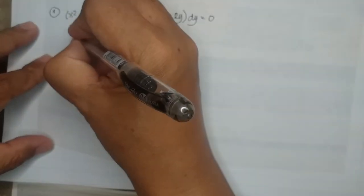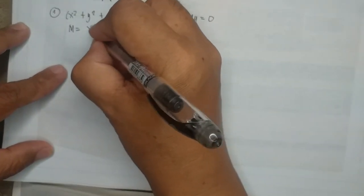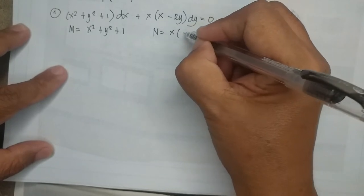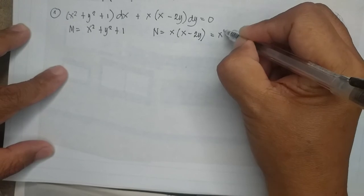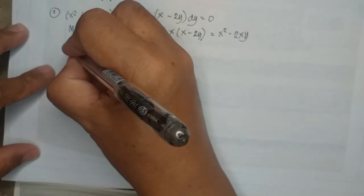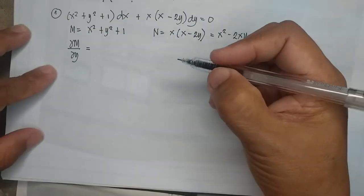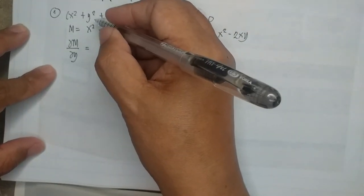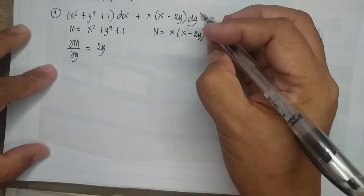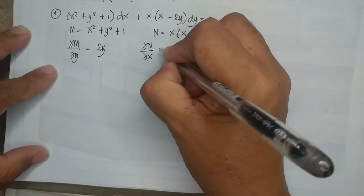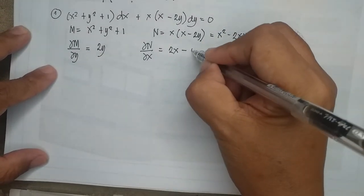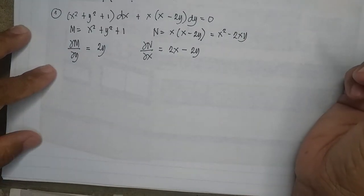Let us determine M and N. M is x² + y² + 1, and N is x(x − 2y), which we can rewrite as x² − 2xy. Taking the derivative of M with respect to y, holding x constant: the derivative of x² is zero, the derivative of y² is 2y, and the derivative of 1 is zero — so ∂M/∂y = 2y. Taking the derivative of N with respect to x, holding y constant: ∂N/∂x = 2x − 2y. Since these are not equal, we have a non-exact differential equation.